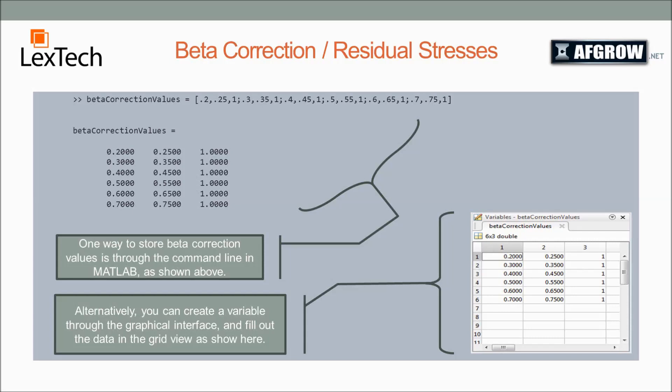Here are two ways that we can set the beta correction value array. First, we could set it in MATLAB manually, just typing out the first, second, and then third with a semicolon, and this will output a two-dimensional array as shown. Alternatively, we could right-click and create a variable in MATLAB and then paste the data from Excel or another source as shown here.